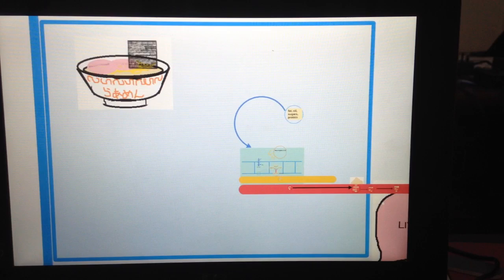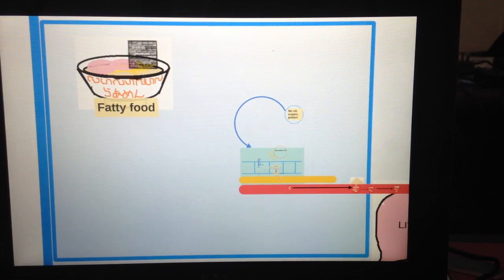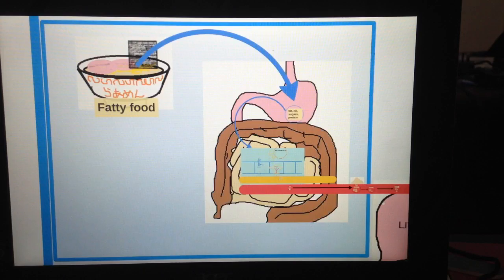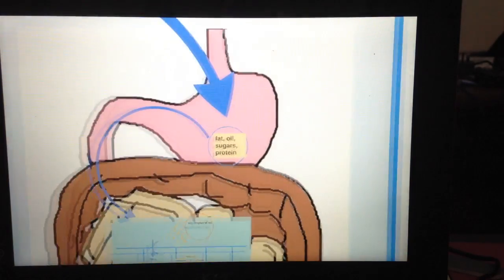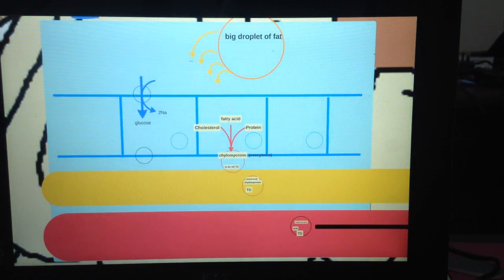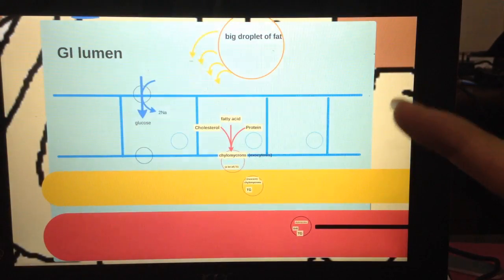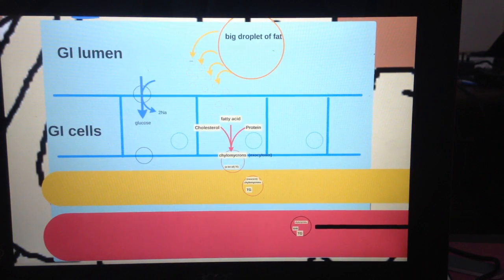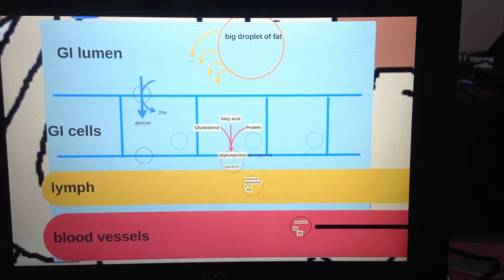Everything starts with food, a fatty food. And if you're wondering what that is, it's ramen, a Japanese dish. Let me put a link here so that if you don't know and you're interested, you can follow this link. Anyway, this fatty food comes into a gastrointestinal system by us eating it. So fat, oil, sugars, and protein go into the small intestine. This is a schematic diagram of the GI lumen, the GI cells, the lymph, and the blood vessels.